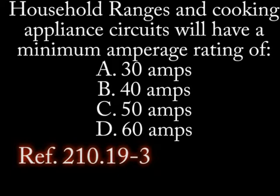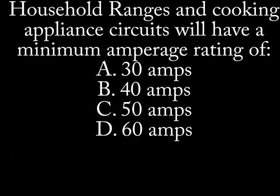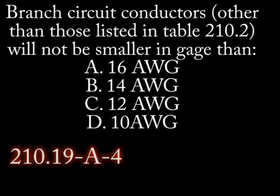Number 7. Household ranges and cooking appliance circuits will have a minimum average rating of: A. 30 amps. B. 40 amps. C. 50 amps. D. 60 amps.